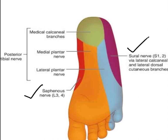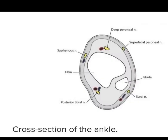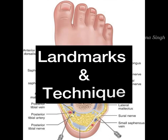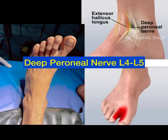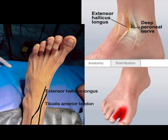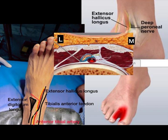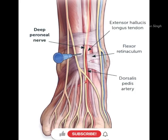For an ankle block, we have to give five injections: one in the midline in front, two in front of the malleoli, and two behind the malleoli. The deep peroneal nerve lies between the two tendons — extensor hallucis longus and extensor digitorum longus — just lateral to the artery, which can be used as a landmark.